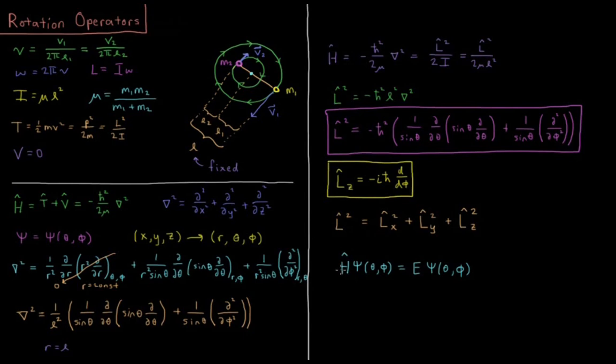So now we are all set up for our Schrödinger equation for H ψ equals E ψ. Our ψ is going to be a function of θ and φ, the spherical polar coordinates for the angles at a constant bond length.